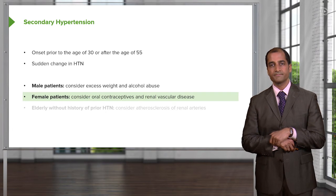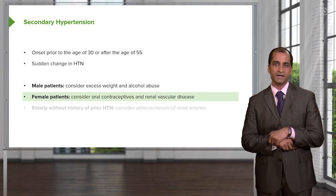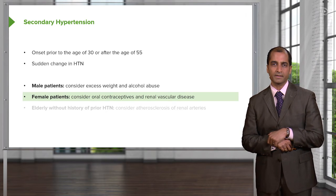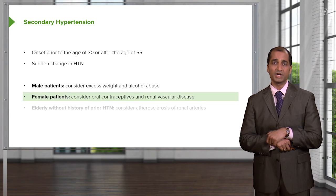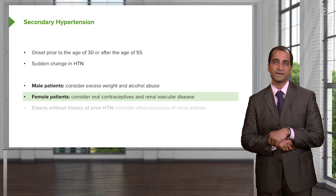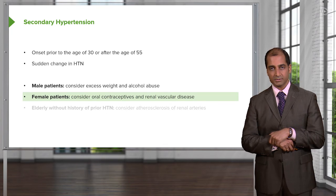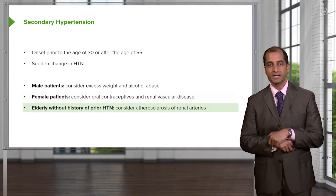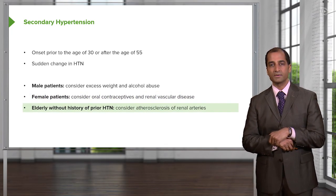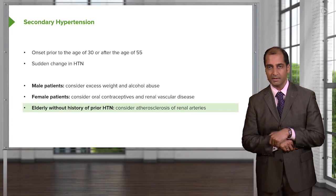What about renal vascular disease? The particular renal vascular disease that should come to mind when thinking about a young female — thirties perhaps — is fibromuscular dysplasia. For the elderly patient without a history of prior hypertension, you must consider atherosclerosis.